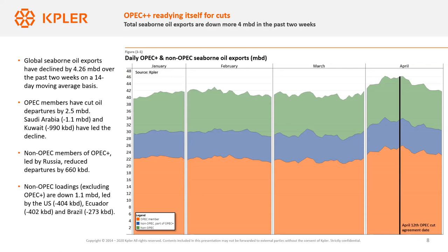Since OPEC+ reached its historic agreement to cut production by almost 10 million barrels per day — exactly 9.7 million barrels per day, representing 10% of global supply — reached on the 12th of April, you can see on the chart on the right OPEC exports in orange and non-OPEC OPEC+ countries in blue. We've seen their exports and loadings come down quite significantly from that date, even though the agreement is only applicable from the 1st of May. In total, we're now about 4 million barrels per day less in terms of loadings compared to the peak seen in early April.